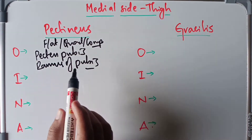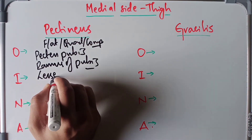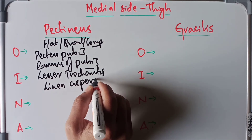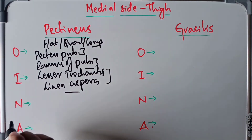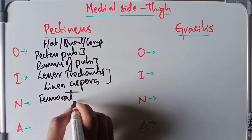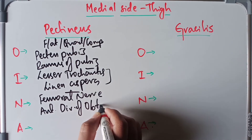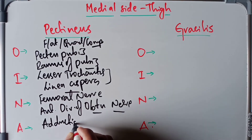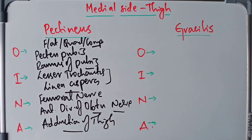The pectineus arises from the pectineal line and ramus of the pubis. It is inserted into the line extending from the lesser trochanter to the linea aspera of the femur. Its nerve supply comes from the femoral nerve and the anterior division of the obturator nerve — confirming its composite nature. Its action is adduction of the thigh.